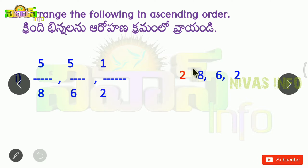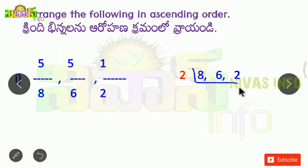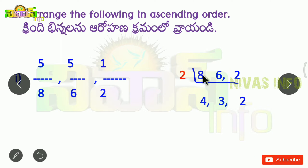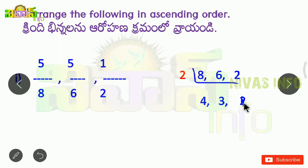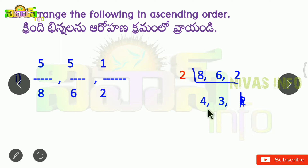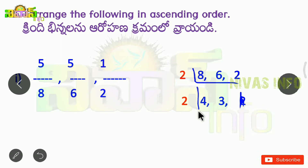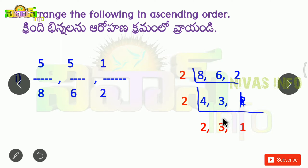We divide this by 2. We divide: 2, 4, 8. Then 2, 3, 6. Then 2, 1, 2. Next: 2, 2, 4. Then 3 to 3, 1 to 1.